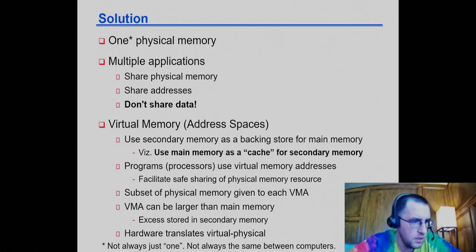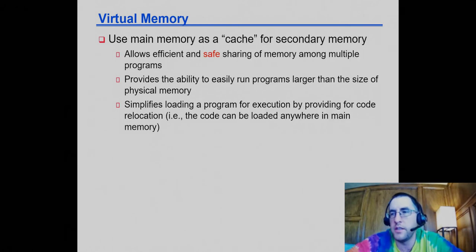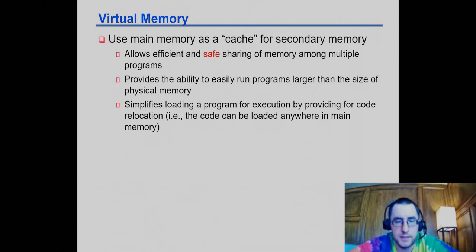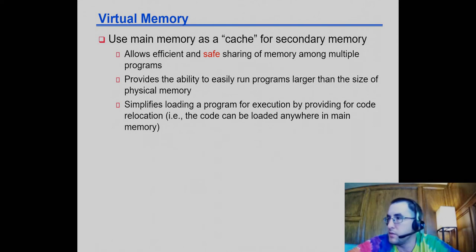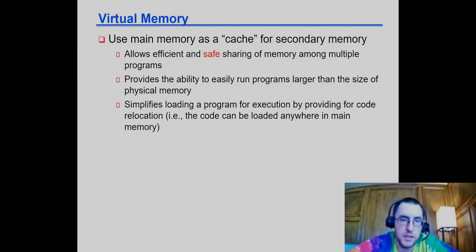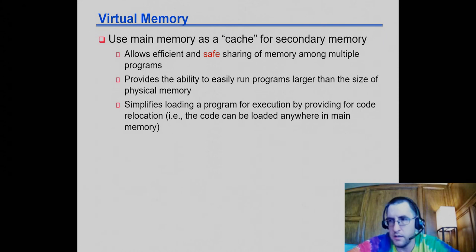If secondary storage runs out, then the application dies — though that's typically not common. Virtual memory allows us to safely share the physical resource of main memory among multiple executing programs. Historically, this was actually the original reason virtual memory was created: to solve a compatibility problem across different computers with differing physical memory sizes, so you could take a program from one computer to another with the same processor but different physical memory and have it still work.